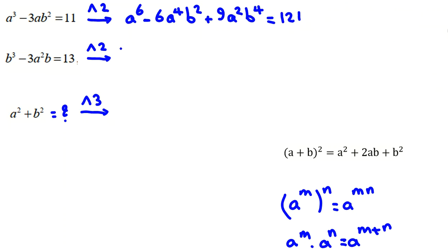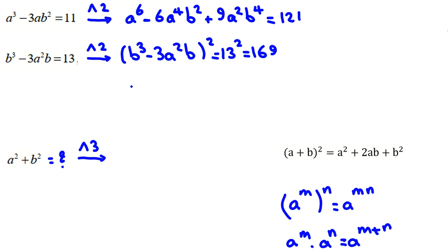If we do the same thing here, it will be (b³ - 3a²b)² = 13² = 169. And then first one squared, b⁶, 2 times this times this, which will be negative 6a²b⁴, plus this squared, which will be 9a⁴b² = 169.